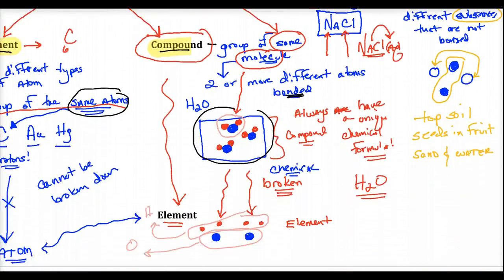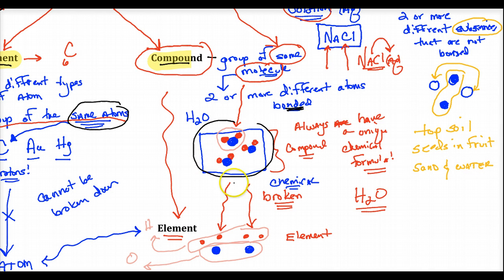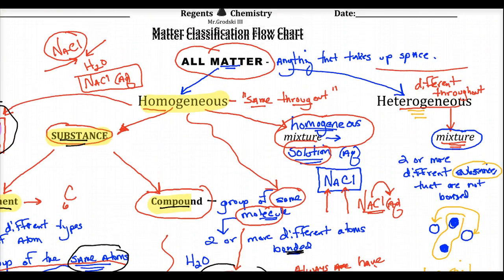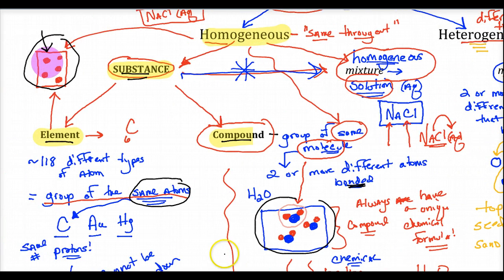Compounds always have a unique chemical formula — water is always H₂O, always the exact proportion of hydrogen to oxygen: the law of definite proportions. Mixtures don't have chemical formulas and can be concentrated or dilute. These are important definitions to understand, not just memorize — you have to be able to visualize them with models.